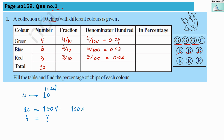We calculate: 100 × 4 ÷ 10. The 10s cancel out and we get 40 percent. So four chips out of ten is 40 percent. This is the unitary method being used. So the percentage for green chips is 40 percent.